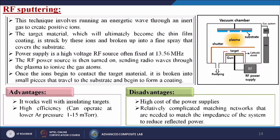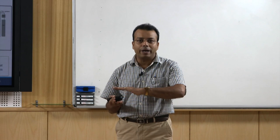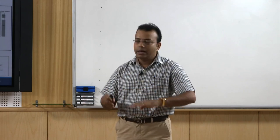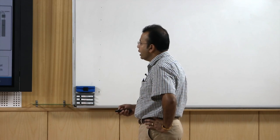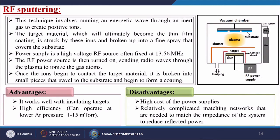In the setup, the argon ions heat the target material; a shutter acts as a shield so that the ions break into small particles that come directly onto the substrate and give a fine, uniform coating. RF sputtering works well with insulating parts, has high efficiency, and can operate at lower argon pressure — generally 1 to 15 milli torr. Disadvantages include high cost of power supplies and relatively complicated matching networks needed to match the impedance of the system and reduce reflected power.